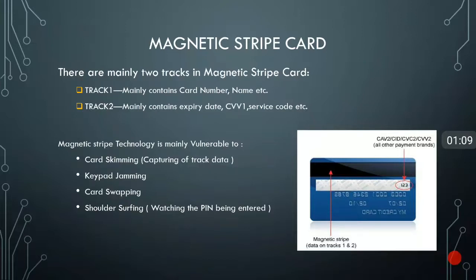The next factor is keypad jamming — in this case the major buttons on the keypad are jammed and the data is captured in between. The third point is card swapping, which is mainly used in merchant establishments wherein whenever the card swapping is happening at the POS machine, that card is also swapped to another terminal, so the data is captured at that other terminal.